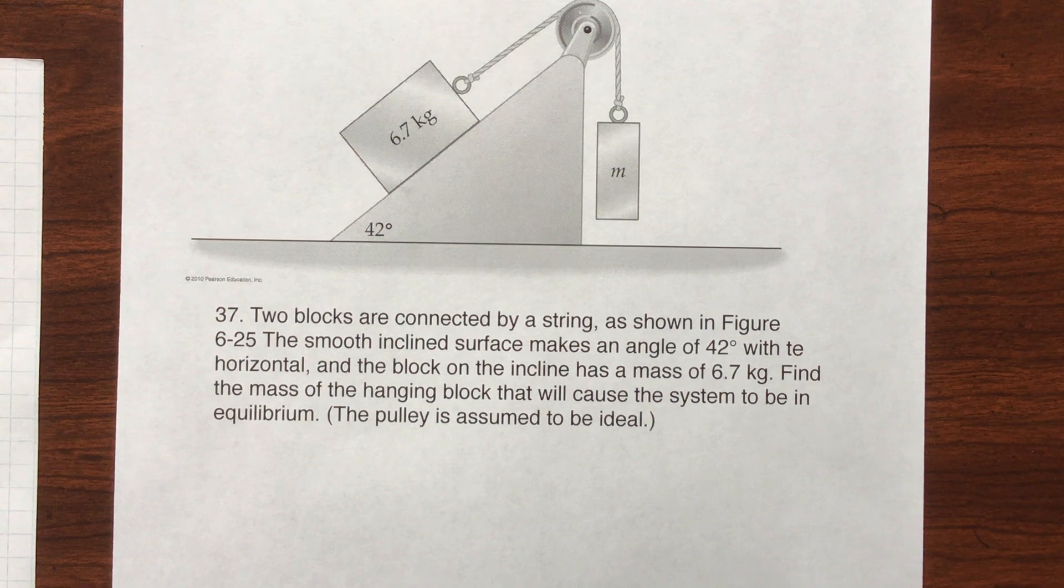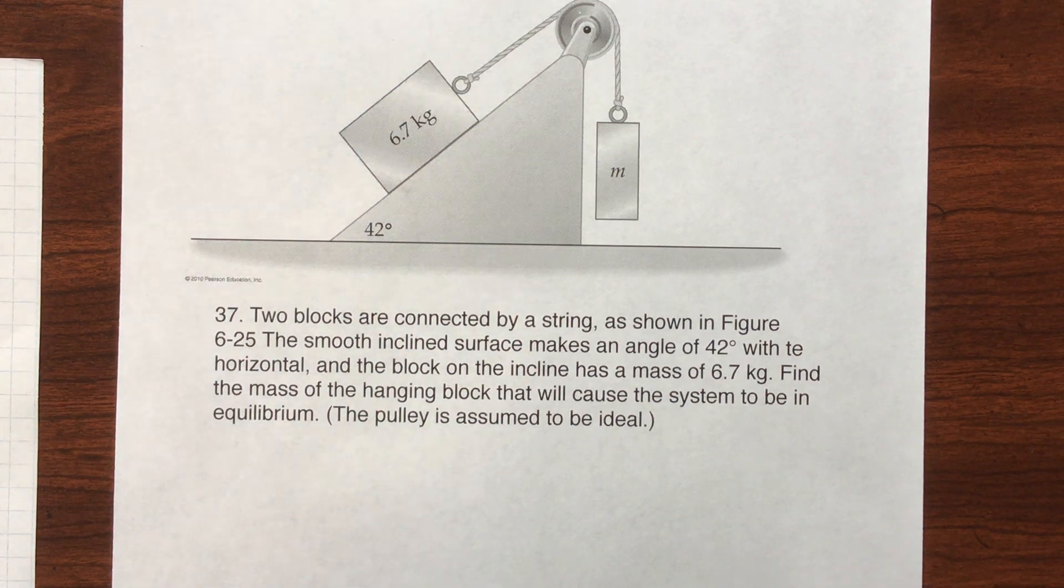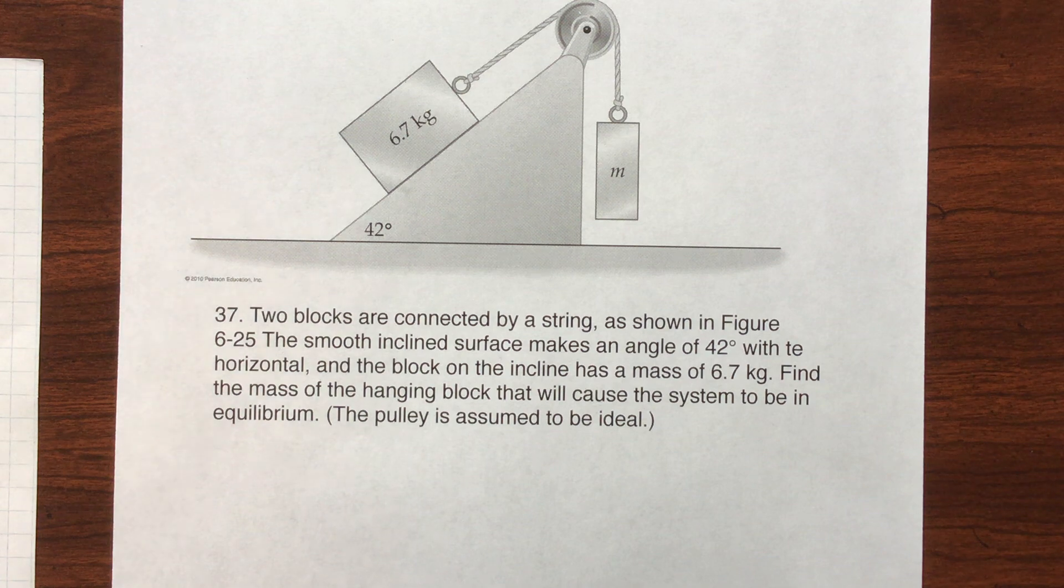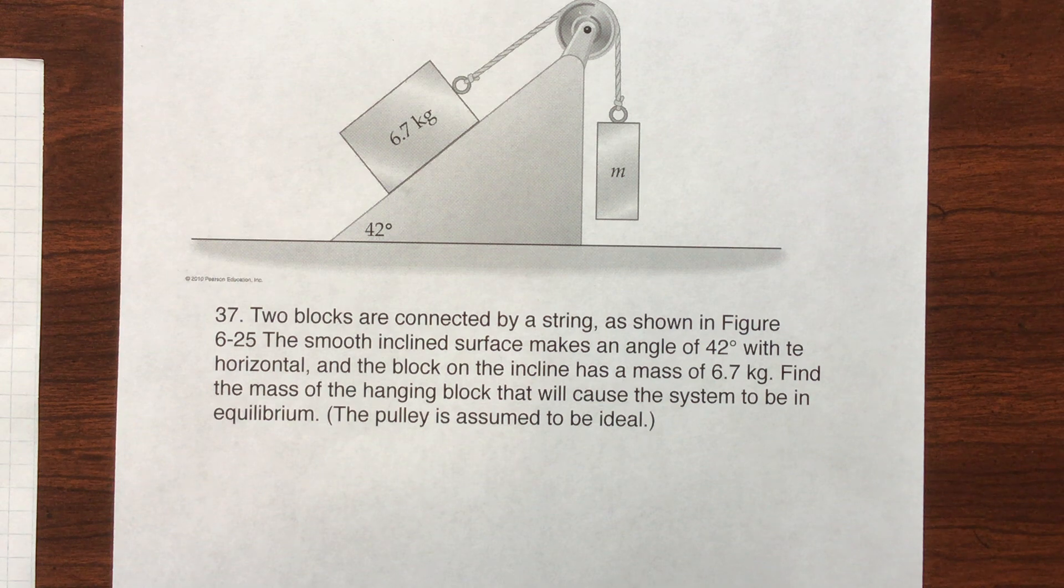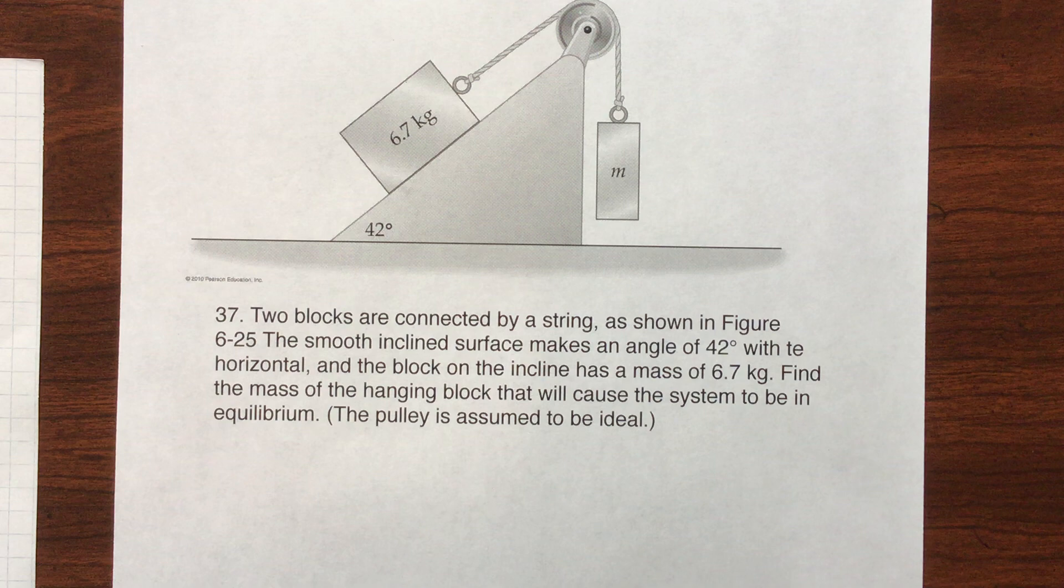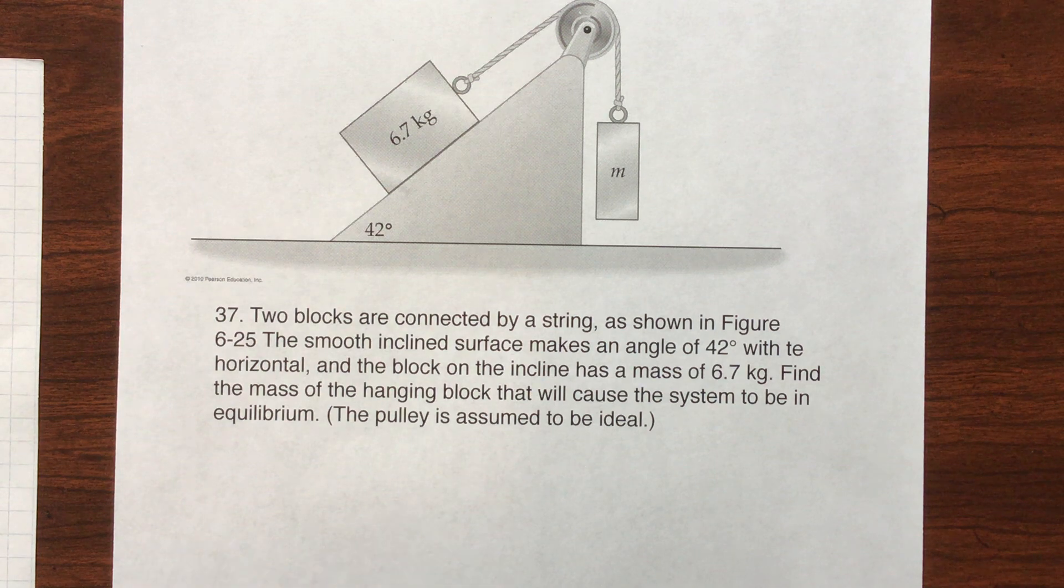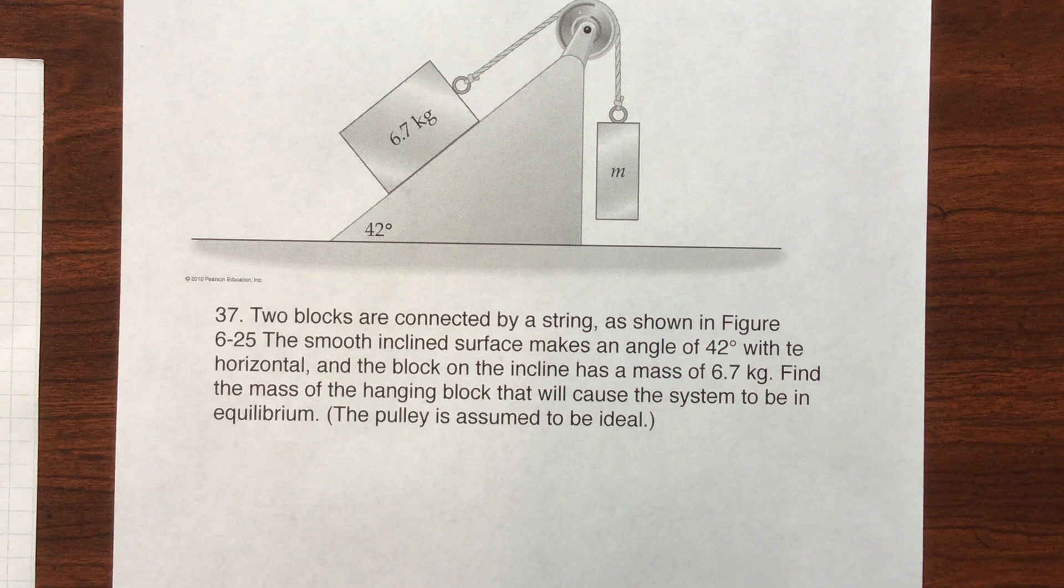This is question number 37 from chapter 6 of Walker Physics on applications of Newton's laws. The question says two blocks are connected by a string as shown in figure 6-25. The smooth incline surface makes an angle of 42 degrees with the horizontal, and the block on the incline has a mass of 6.7 kilograms. Find the mass of the hanging block that will cause the system to be in equilibrium.